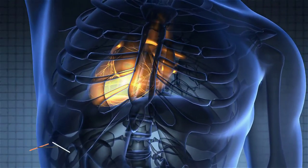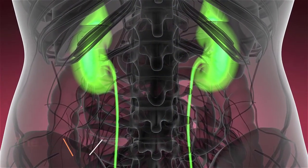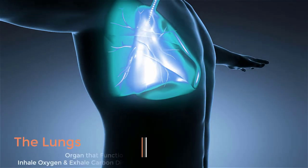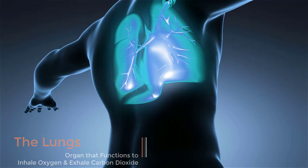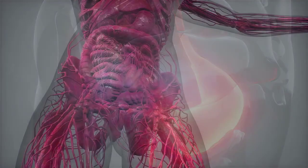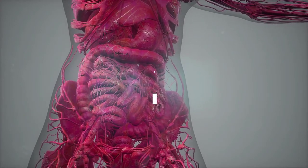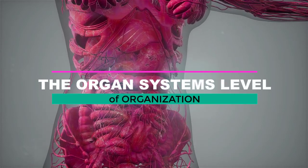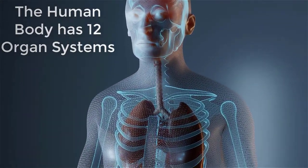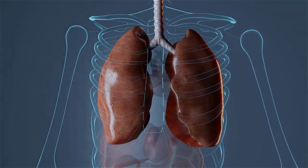The heart is an organ that functions to pump blood through the blood vessels. The kidneys are organs that filter the blood and make urine. The lungs function to inhale oxygen and exhale carbon dioxide. The stomach is an important organ for digestion. Organs work together in a cooperative fashion as organ systems, bringing us to the organ systems level. The human body has 12 organ systems, each containing several specific organs working together to perform specific functions in the body.